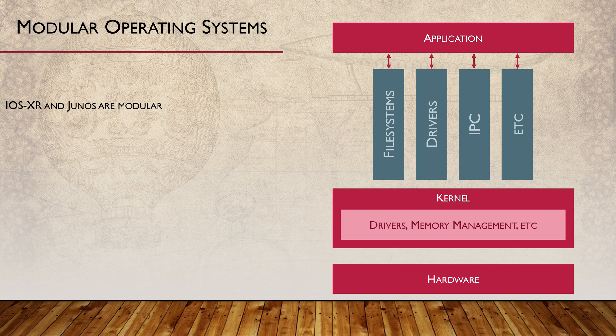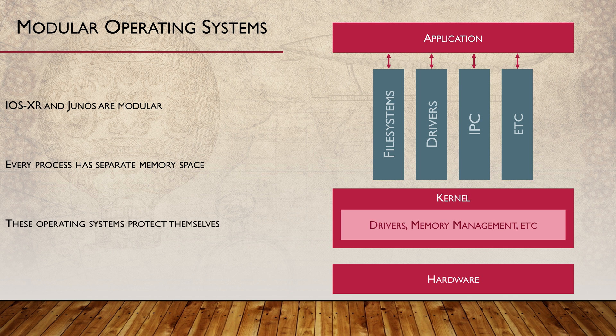High-end Cisco routers run iOS XR, which like Junos is modular. Everything runs in its own protected memory space. This was in fact one of Juniper's primary design goals when they created Junos: separation of modules for stability. One of the advantages of this is that we can restart certain processes without restarting the entire device.